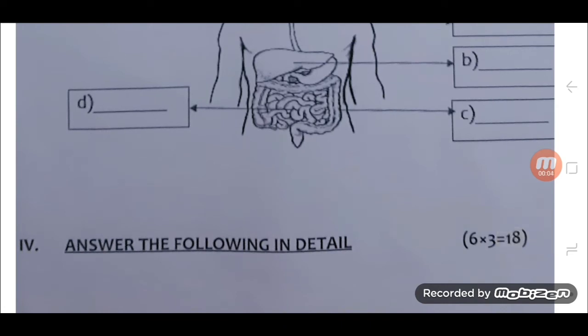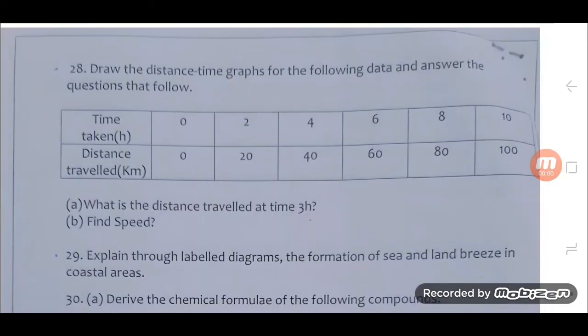Answer the following in detail. 28. Draw the distance time graphs for the following data and answer the questions that follow. Times taken in hours, distance travelled in kilometre. A. What is the distance travelled at time 3 hours. B. Find speed.